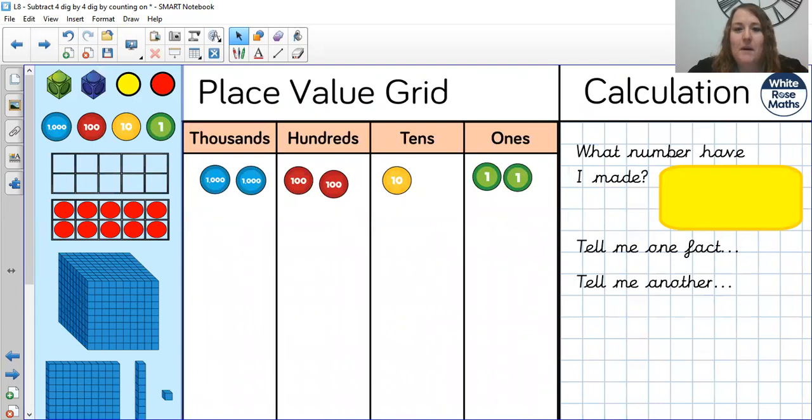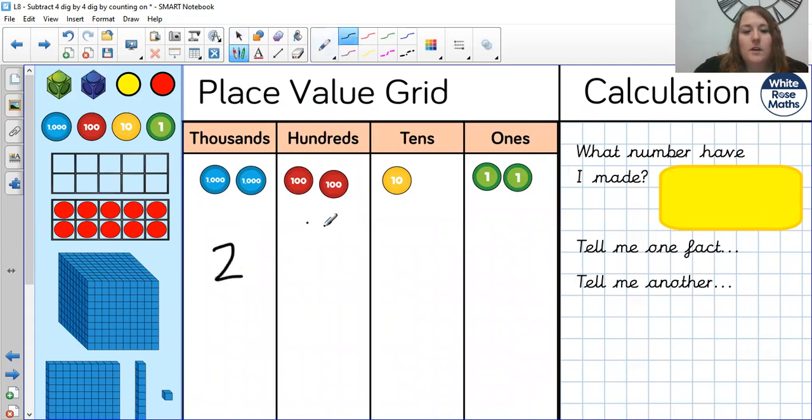Let's start today then. What number have I made today? Hopefully you can tell me quite quickly. There are 2,000s, 200s, 1 ten and 2 ones. So I have made 2,212.